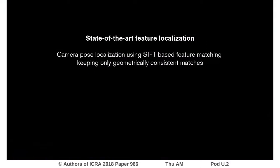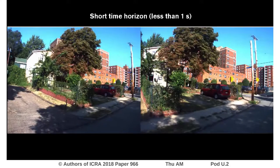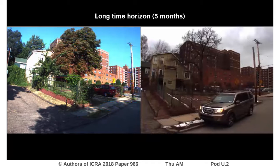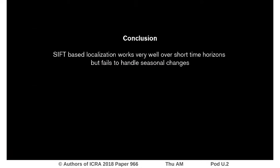Traditional methods using SIFT and RANSAC work very well for images that are close in time, such as this example where the images were taken with less than one second interval. But if we return five months later when the leaves have fallen off the trees, the surviving matches are incorrect, as you can see from this jumble of lines. So we see, SIFT-based localization works very well over short time horizons but fails to handle seasonal changes.